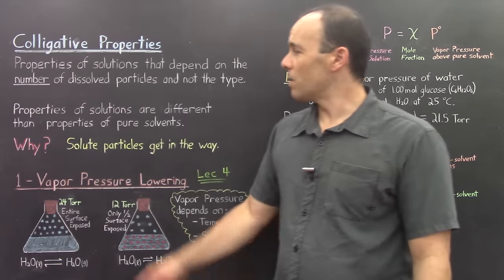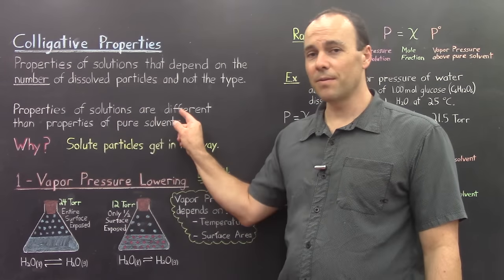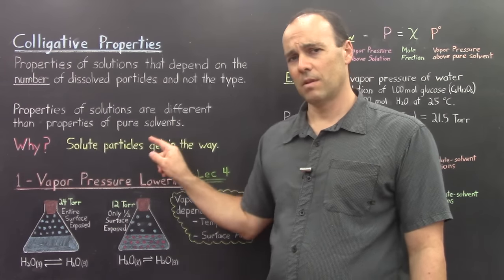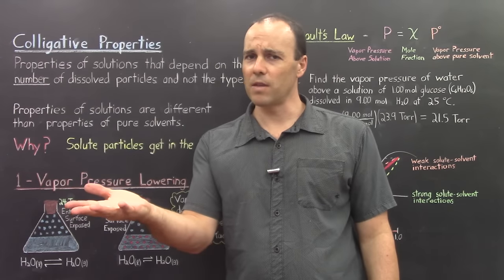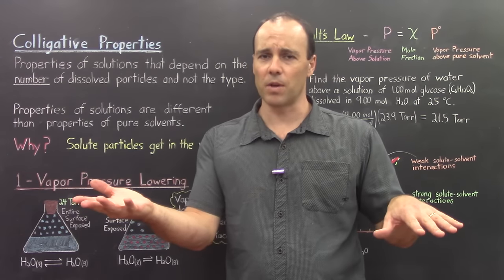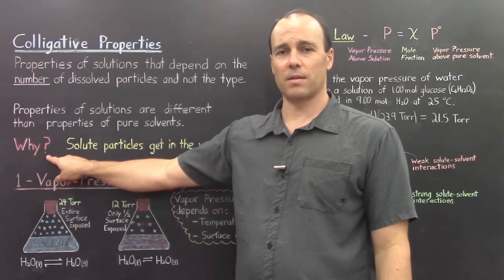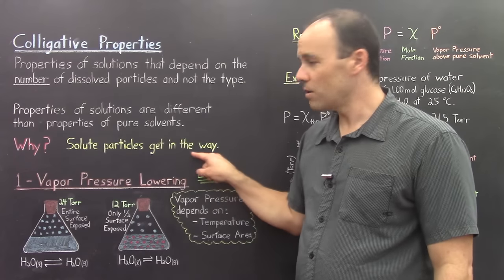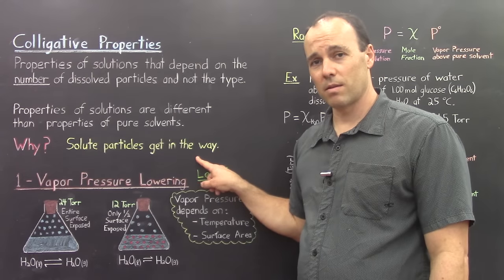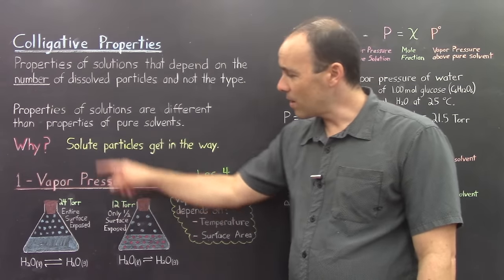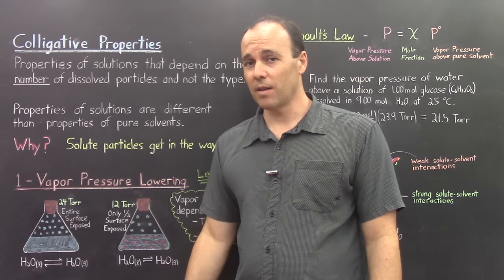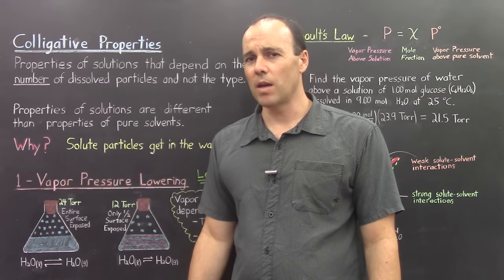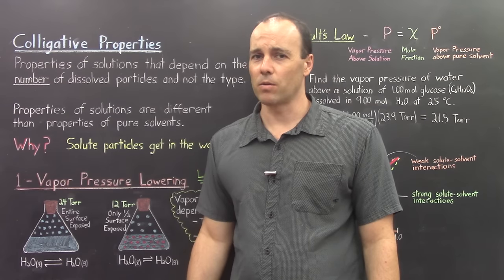The properties of solutions are different than properties of pure solvents. Solutions have these properties, but pure solvents do not. Why is that? Well, the reason is fairly simple: the solute particles just get in the way. Now, as we discuss these four colligative properties, try and see if you can predict how these solute particles get in the way.